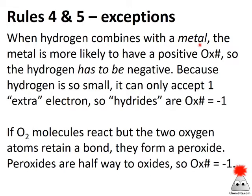Hydrogen is usually plus one, but when it's bound to a metal, most metal ions are more likely to have positive oxidation numbers. So something has to have a negative oxidation number — hydrogen can take on a negative value. It can only take on one extra electron, making a hydride with an oxidation number of minus one. Similarly with oxygen: if an oxygen molecule reacts without completely breaking apart the O2 unit, we get an intermediate structure halfway between O2 (oxidation number zero) and typical oxygen (minus two) — a peroxide, with an oxidation number of minus one.